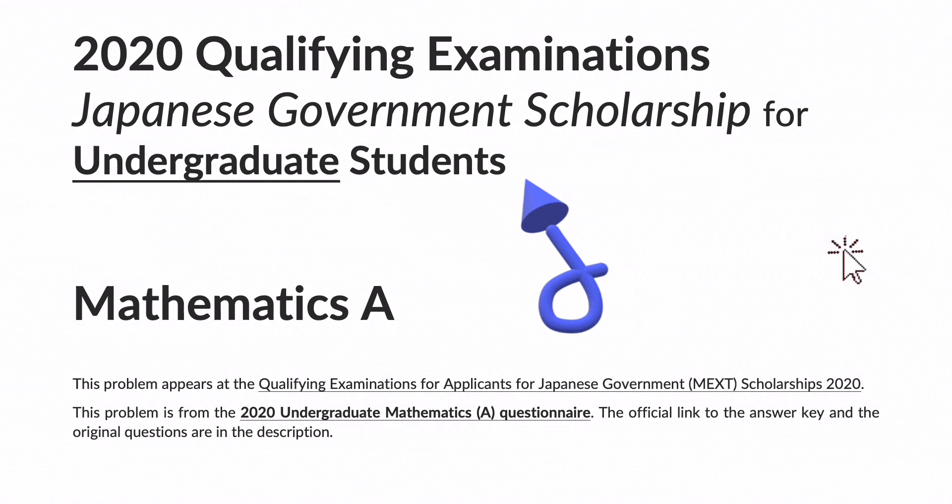This problem appears at the Qualifying Examinations for Applicants for Japanese Government MEXT Scholarships 2020. This problem is from the 2020 Undergraduate Mathematics A Questionnaire. The official link to the answer key and the original questions are in the description.